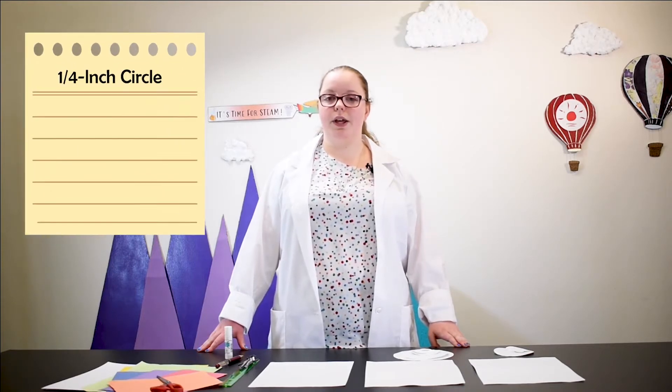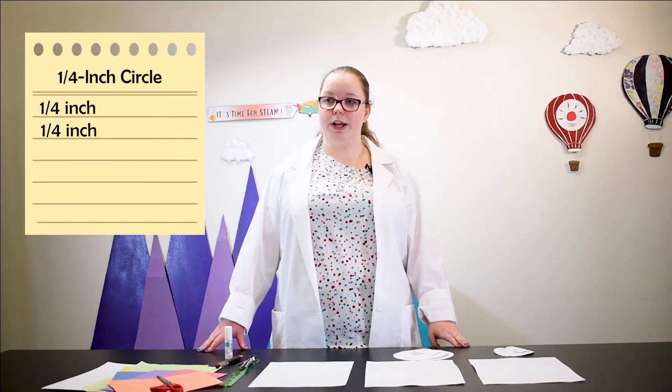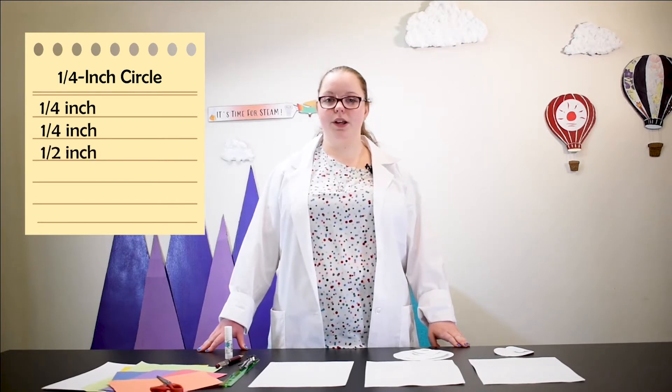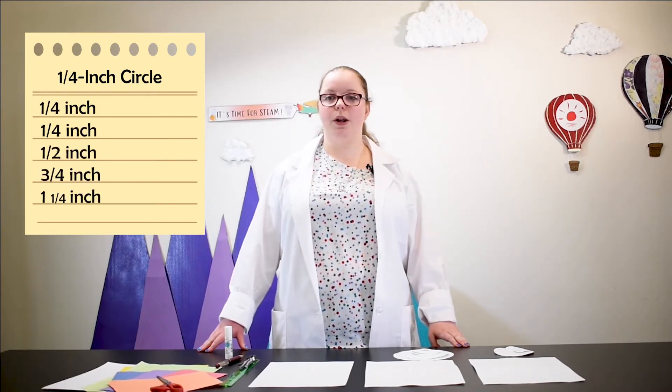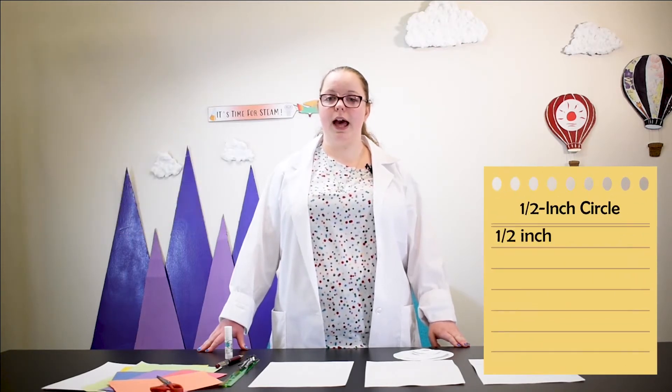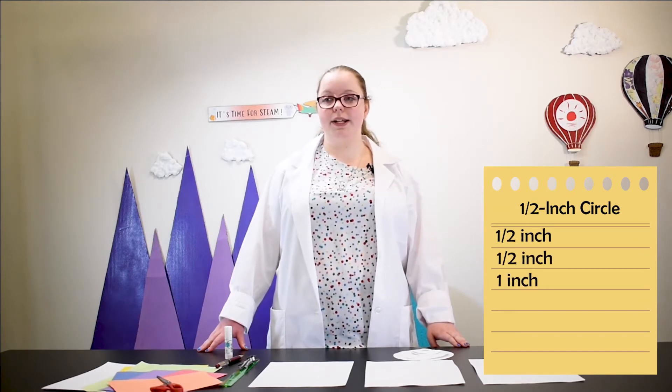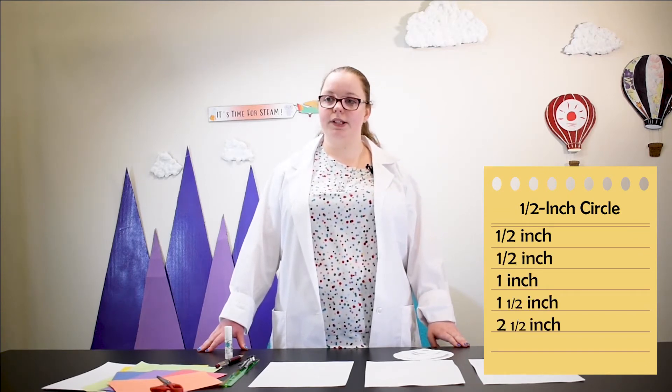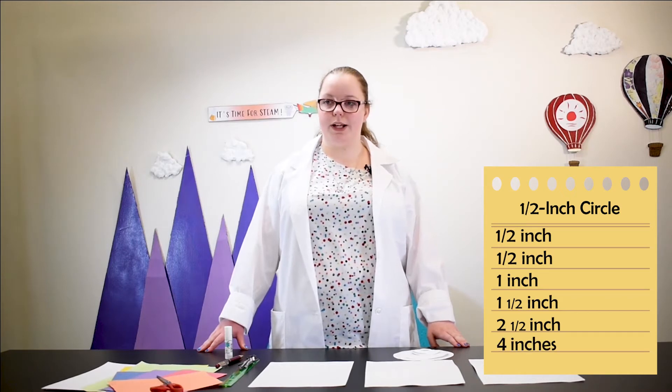For the quarter-inch circle sequence, it'll be a quarter inch, then a quarter inch, half an inch, then three-quarters inch, then one and a quarter inch, and then two inches. For the half-inch circle sequence, it'll be half an inch, then half an inch, one inch, one and a half inches, two and a half inches, and then four inches.